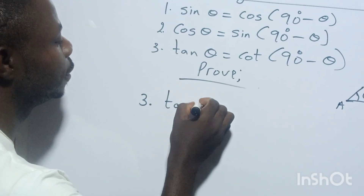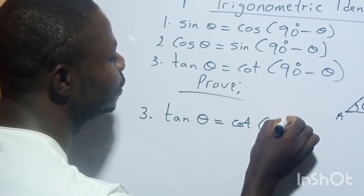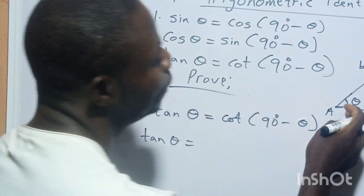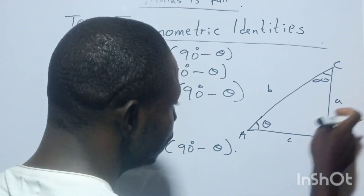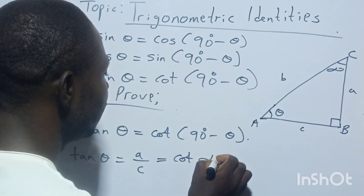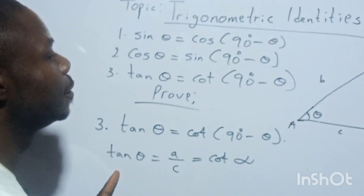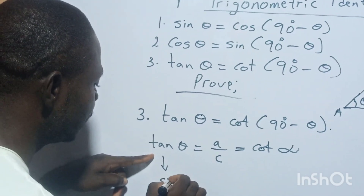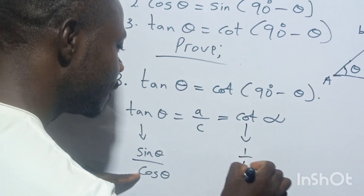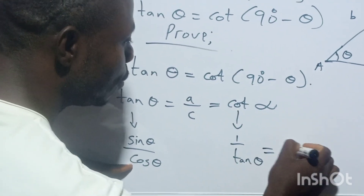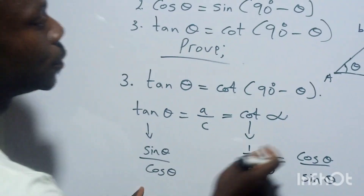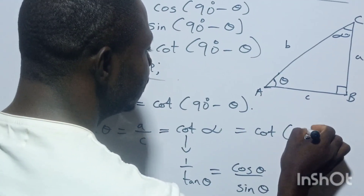Tan θ is equal to cot(90° − θ). Remember that tan θ is opposite over adjacent — A over C — which is called alpha. Remember that cot alpha is the reverse of tan θ. Because tan θ on its own is sin θ over cos θ. Then cos θ on its own is one over tan θ. So that means this one will now be cos θ over sin θ. The reverse of this gives us cot, so we now have cot(90° − θ).